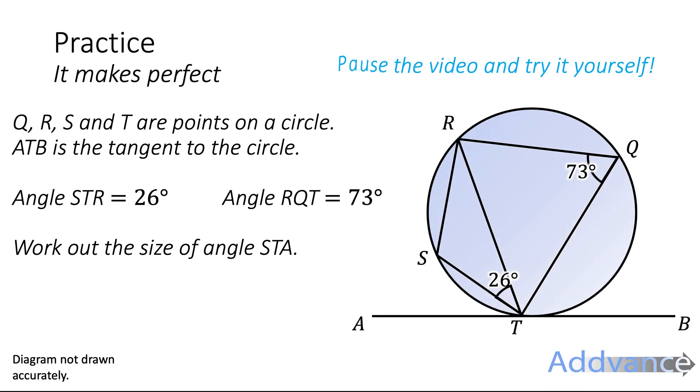I have another one for you to try here. It says Q, R, S and T are points in a circle. ATB is a tangent to the circle. Angle STR is 26, that's labelled here as 26. And angle RQT is 73. Work out the size of angle STA. So I'd like you to pause the video now and I'd like you to try this question yourself. It should take you between 5 and 10 minutes.